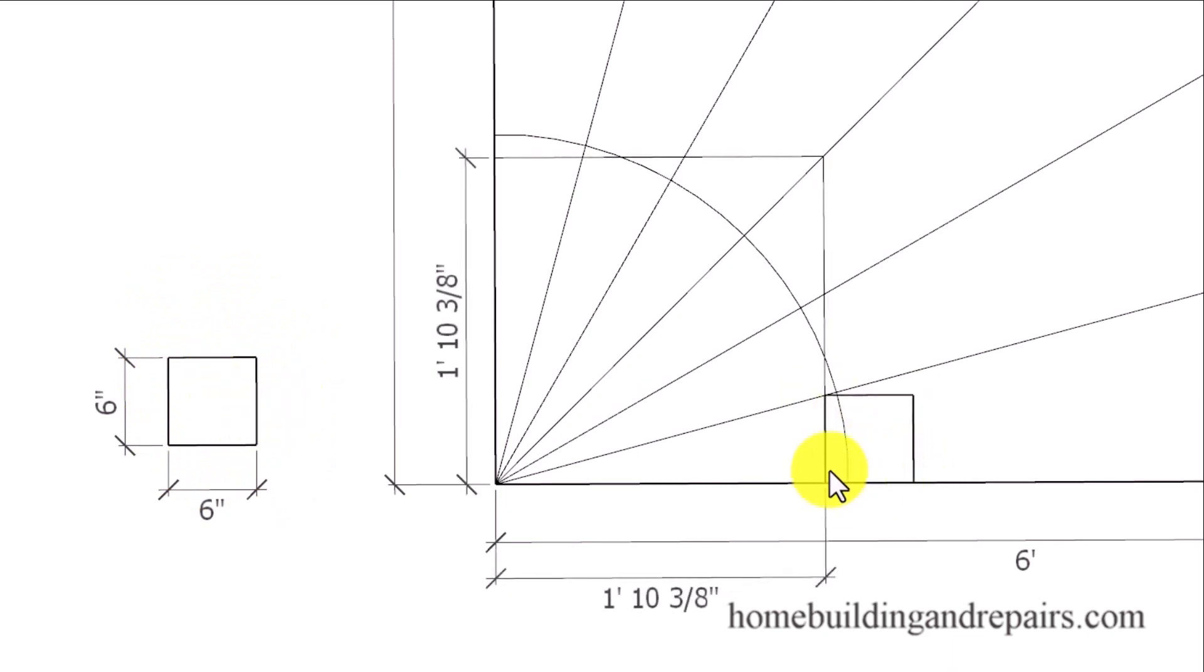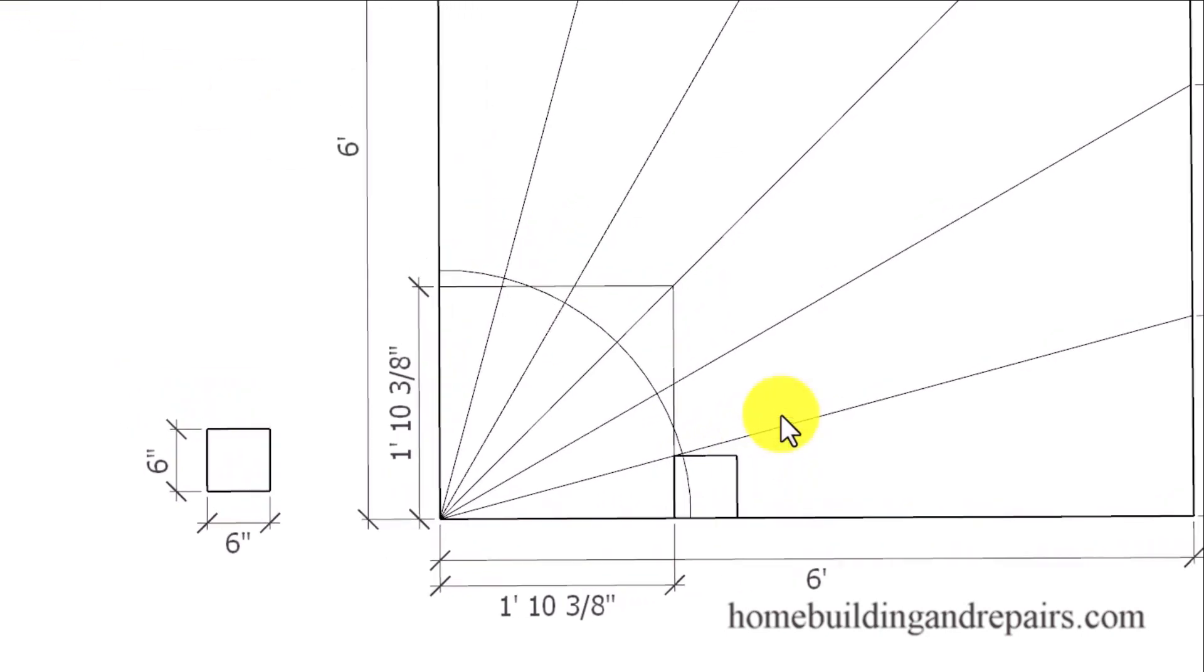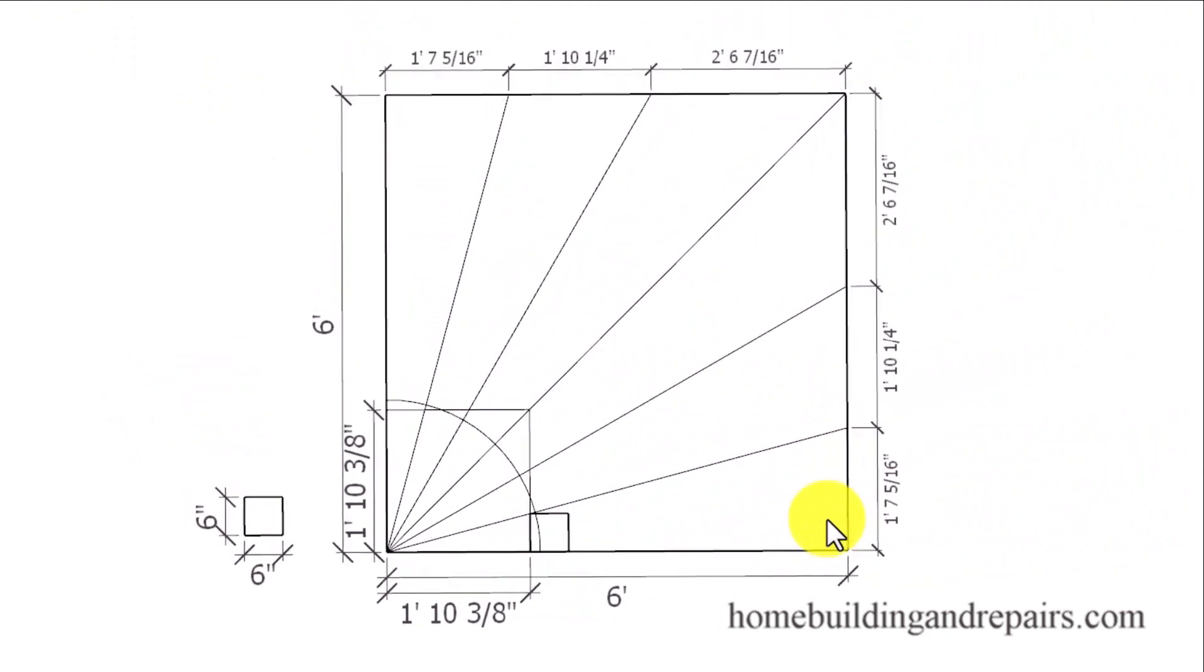Then we're simply going to slide it over until we have it lining up with this point right here. Again, this can be done with a framing square, just lining up the framing square with the six inch measurement there. I do have other videos on that at our website for laying out a variety of different types of winders that I would suggest watching also if this doesn't make sense.